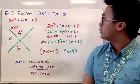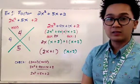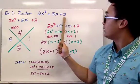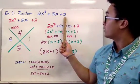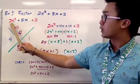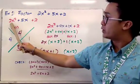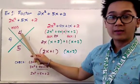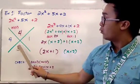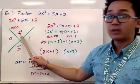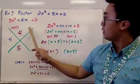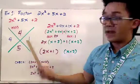For our first example we have 2x squared plus 5x plus 2. The big X method is still used, but we modify it because the coefficient is 2. We multiply the first coefficient and the constant: 2 times 2 equals 4. We now look for two factors that multiply to 4 and add up to the middle term, 5. Those factors are 4 and 1.